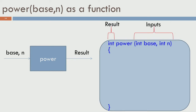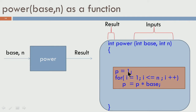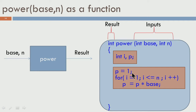We already have the computation code written earlier, so we paste it into the function body: p equals 1, for i equals 1, i less than or equal to n, i++, p equals p times base. This does the computation, but having this code alone is not sufficient. Looking at the sequence of steps, we use variables p and i, but these are never declared inside the function. Every variable must be declared so it can get a location in memory, so we add the declaration 'int i, p' at the top of the function body.